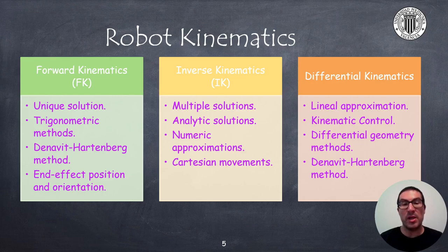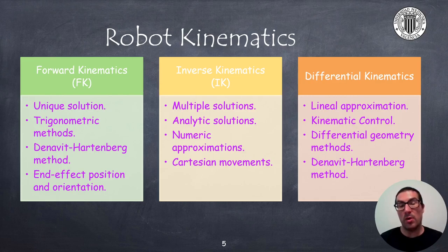Differential kinematics produces a linear approximation of the robot kinematics and therefore it is frequently used in kinetic control. The robot Jacobian can be obtained from differential geometry methods or also from the results when we apply the Denavit-Hartenberg method.